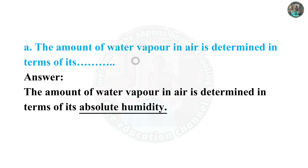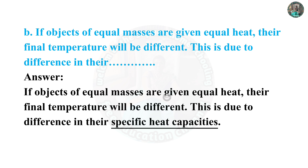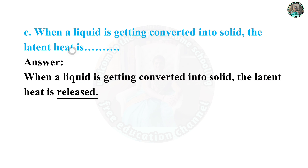The amount of water vapor in air is determined in terms of its absolute humidity. If objects of equal masses are given equal heat, their final temperature will be different. This is due to differences in their specific heat capacities. When a liquid is getting converted into solid, the latent heat is released.